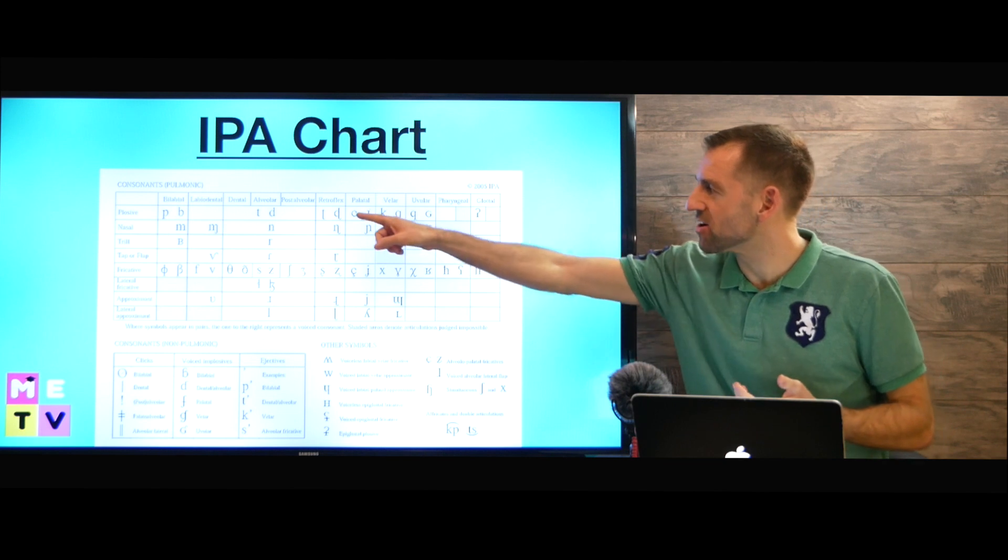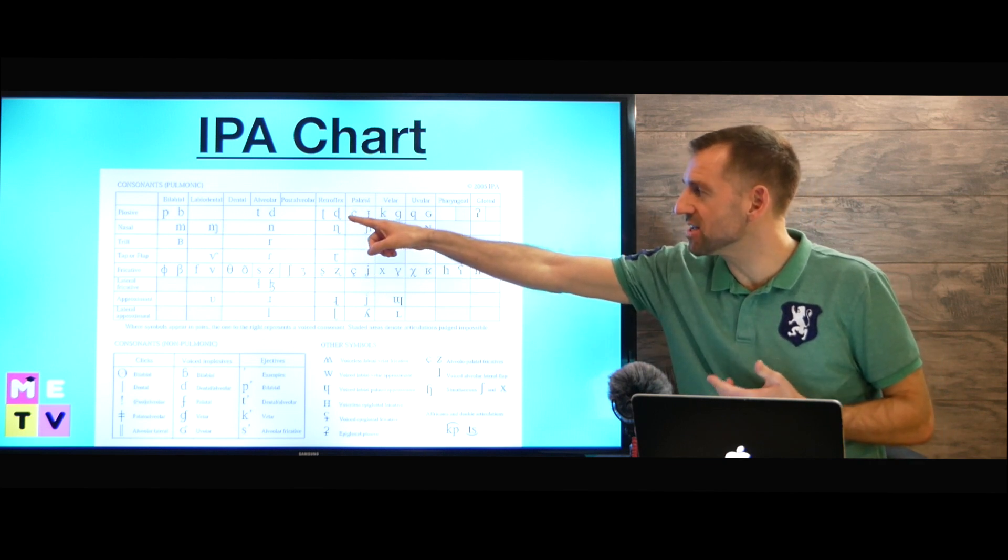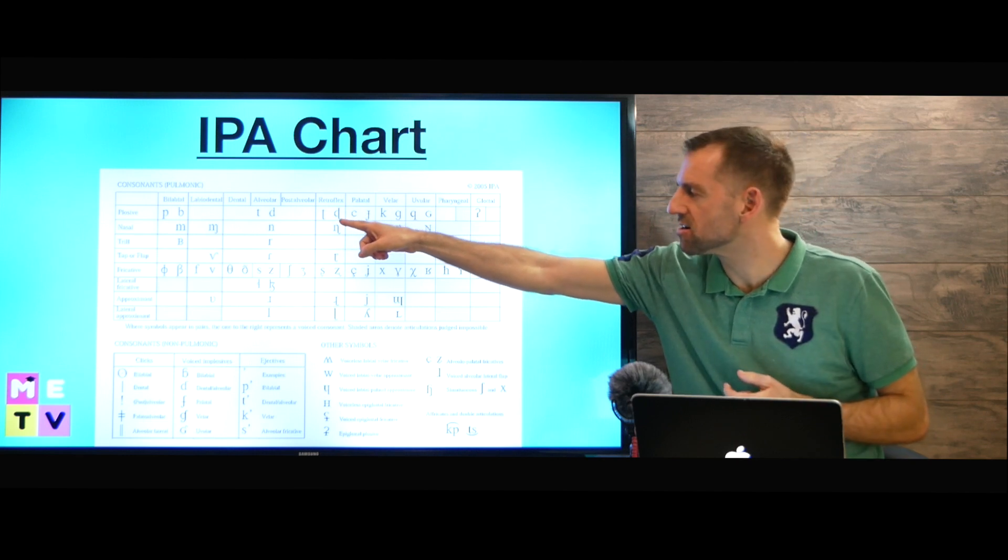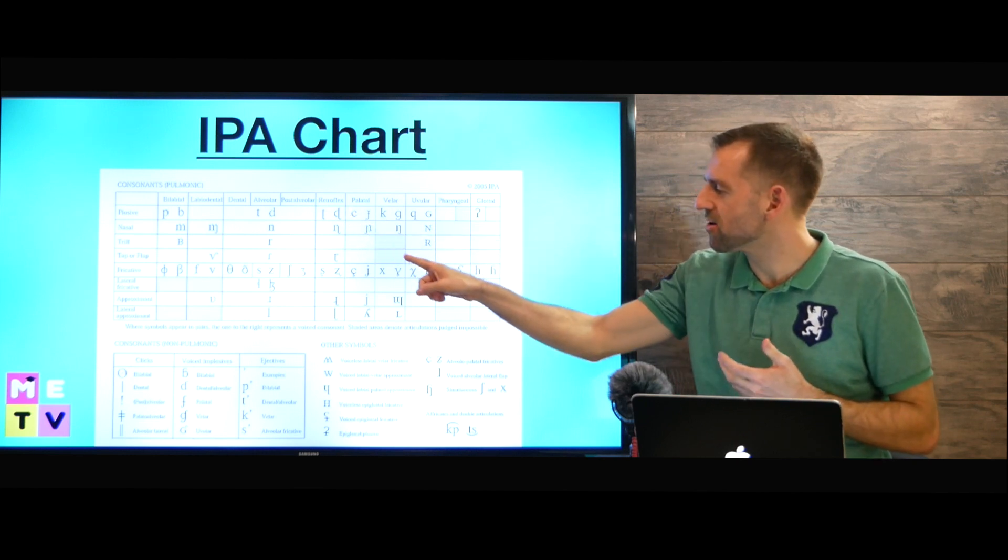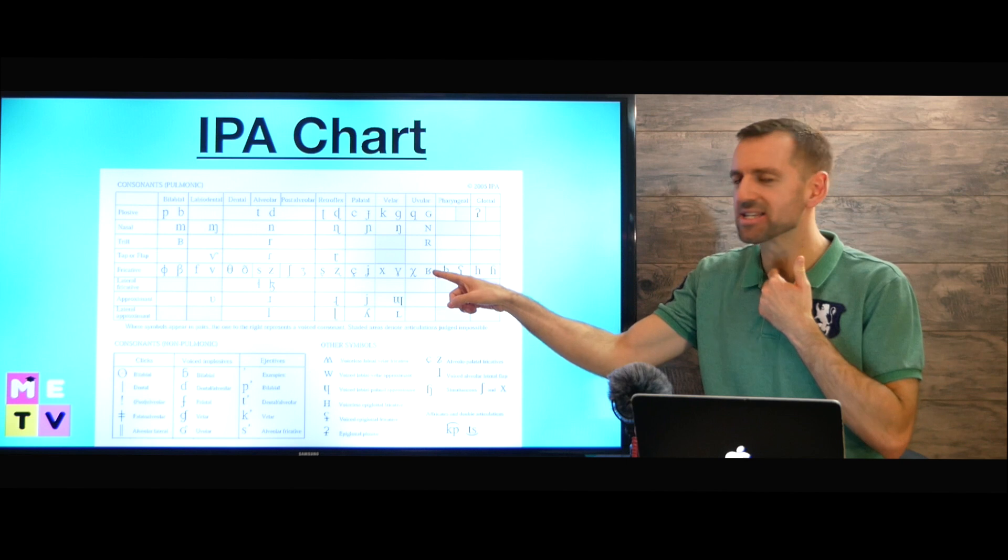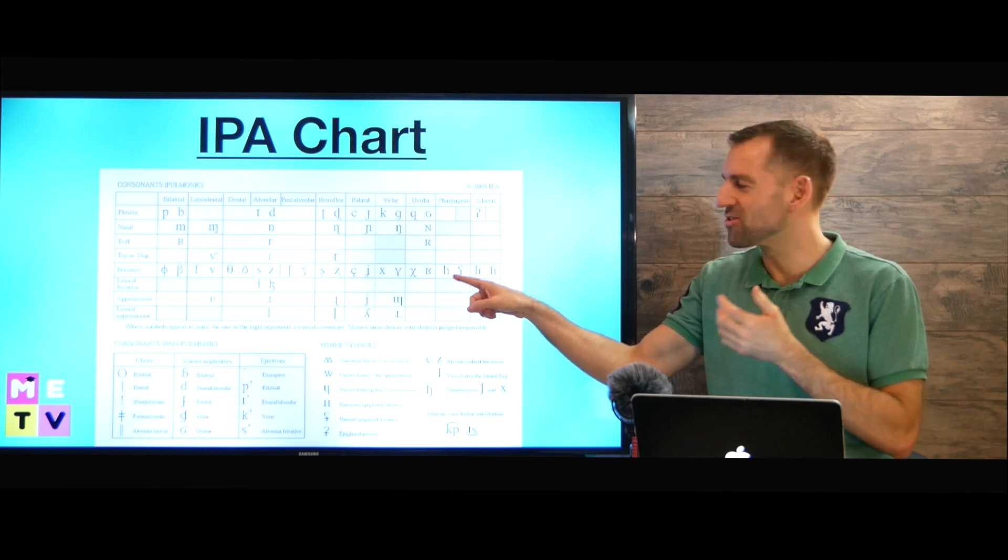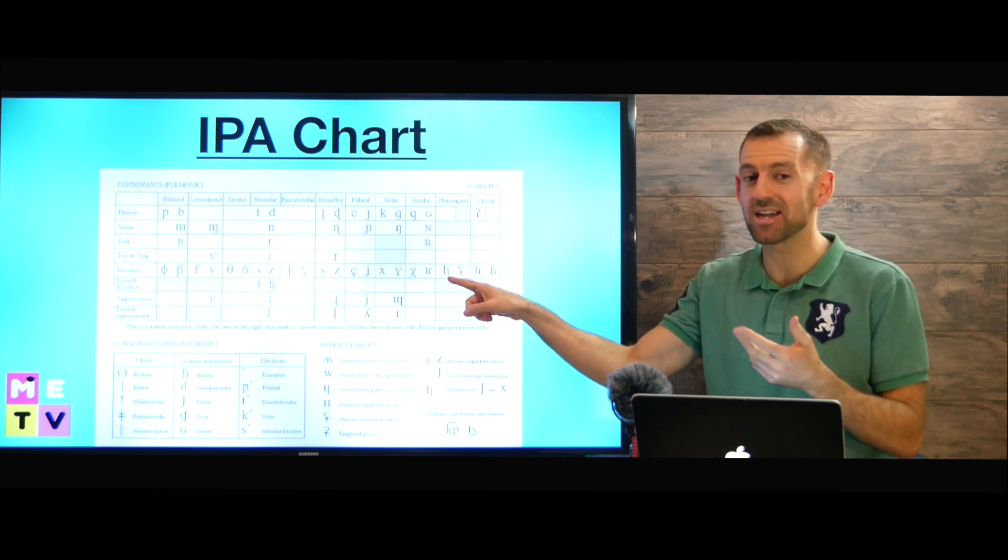Look at here. We have retroflex sounds. Now these are very common in Hindi, like T, D. Over here we have some sounds back in the throat, like R. Those are common in languages like Arabic.